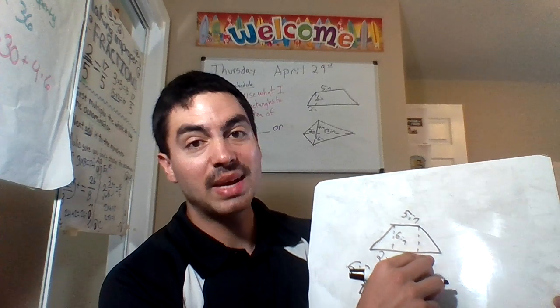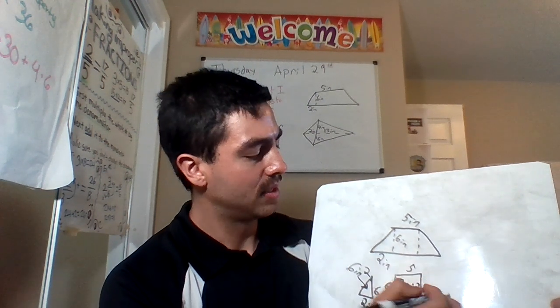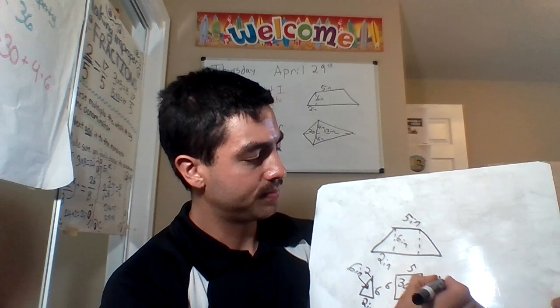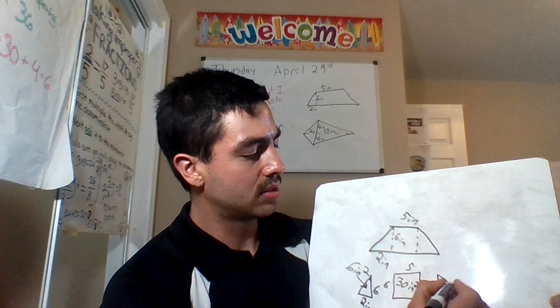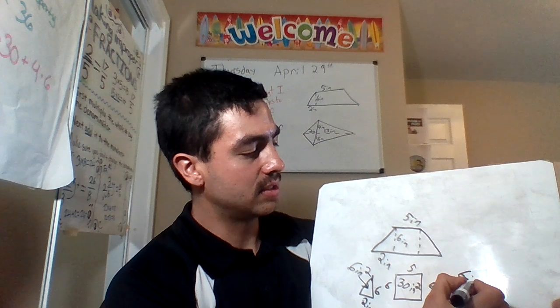This triangle right here, identical. The exact same. So that's two inches, height is six inches. That area is also six inches. Now, in six inches squared, I mean.